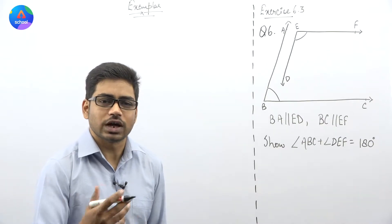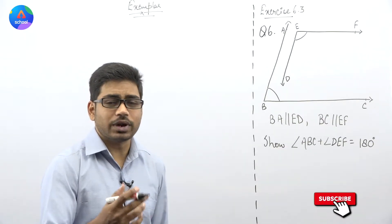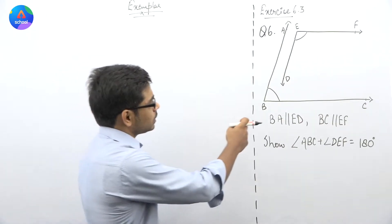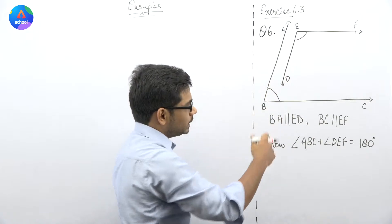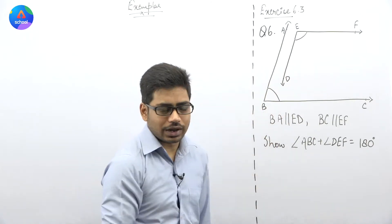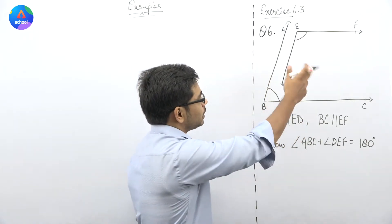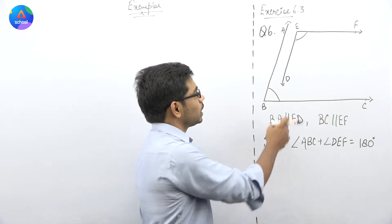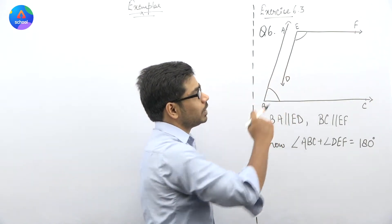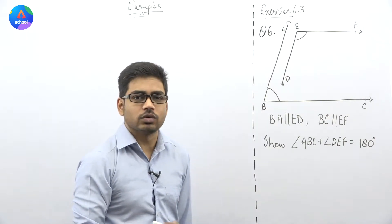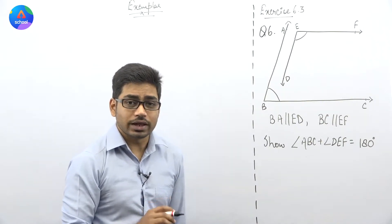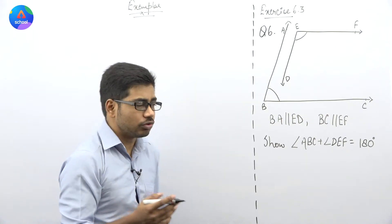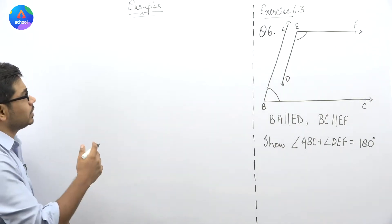The figures are very good. You can think about it: BA is parallel to ED, and BC is parallel to EF. We have to show that angle ABC plus angle DEF is equal to 180 degrees — both angles add up to become supplementary angles.